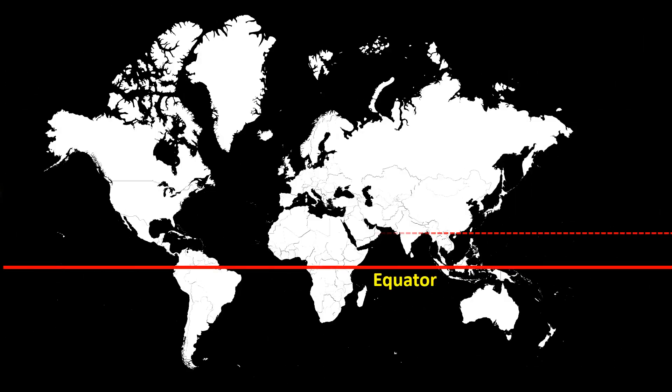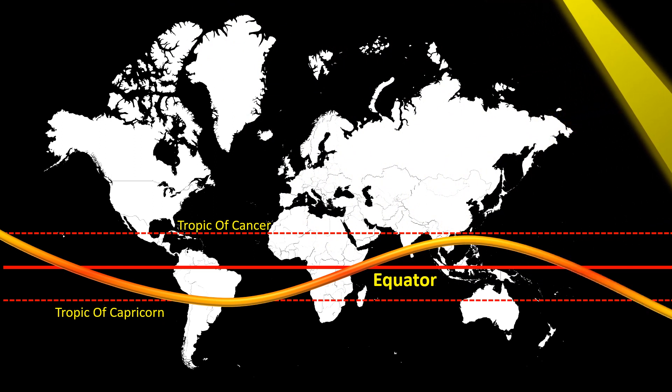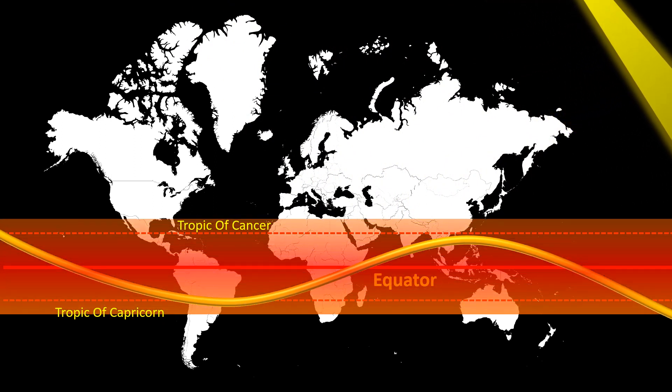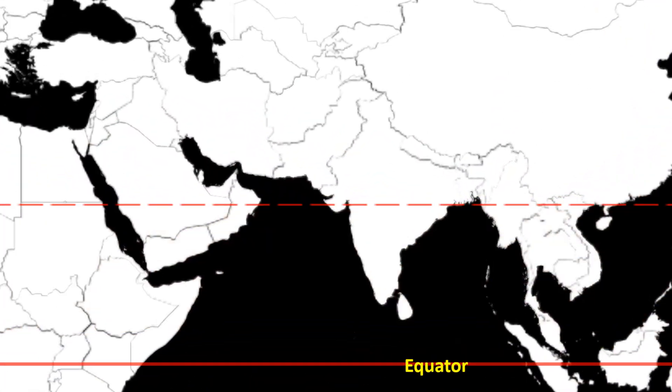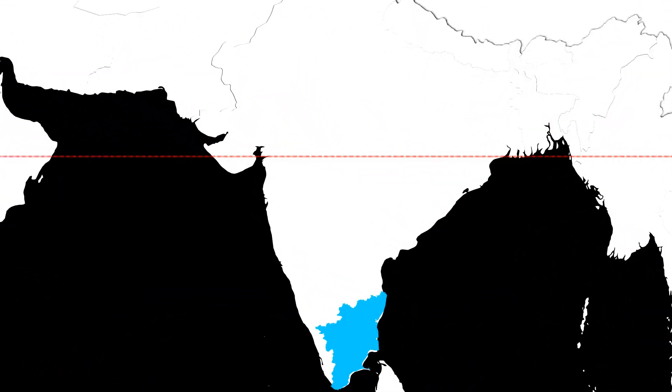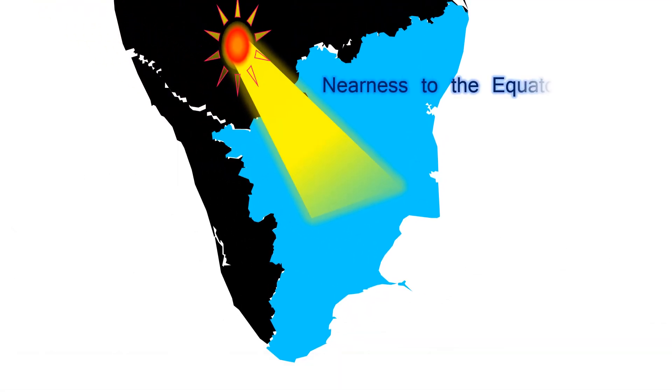We very well know that the sun's vertical rays fall between the Tropic of Cancer and the Tropic of Capricorn. As a result, this region called the tropics experiences sunlight all year round. Being very near to the equator, Tamil Nadu experiences a very hot climate.